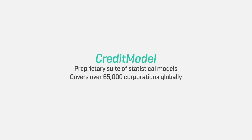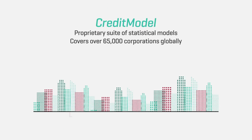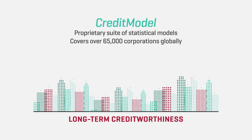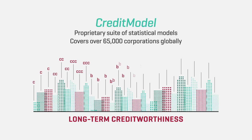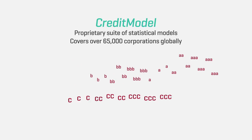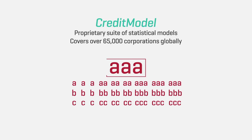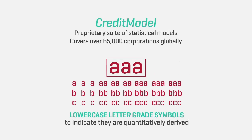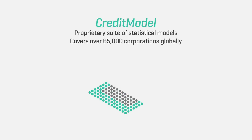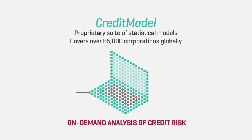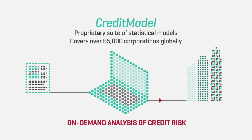Quickly evaluate the long-term creditworthiness of public and private mid-cap and large firms using pre-calculated credit scores based on financial statement information. Estimates are represented by familiar Standard & Poor's rating services letter-grade symbols, using lowercase to indicate they are quantitatively derived. The models are also available in web-based format, enabling users to input proprietary financial statement information to derive credit scores for additional entities.